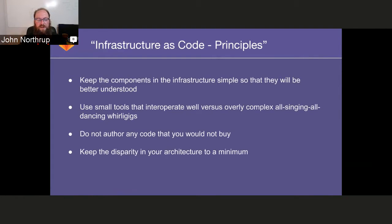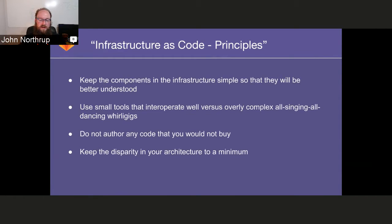The last guiding principle is to keep the disparity in your architecture to a minimum. At GitLab.com, all our servers run the same version of Ubuntu, all have the same base image set, and all start from the same place. We don't have different class-type servers for different components in terms of OS or architecture — we just make differences in RAM and memory. That way there's no guesswork about what our infrastructure is, how it behaves, or how we're managing it.